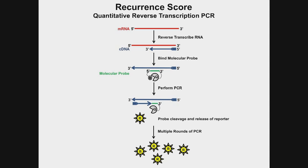In the next step, you bind a complementary piece of DNA to the cDNA you've just copied. That probe has two molecules attached: a fluorescent reporter molecule and a quenching molecule, so the probe is actually silent at this point. Then you do polymerase chain reaction, copying the DNA into multiple copies. In the course of that reaction, the DNA in the probe gets degraded, freeing the reporter molecule from the quencher so it becomes fluorescent. This can be measured in a fluorometer. As you repeat rounds of PCR, you get more freed reporter, and the amount is proportional to how much starting material you have — you can measure this in real time. This is quantitative reverse transcription PCR.